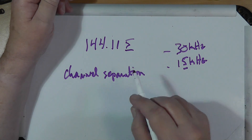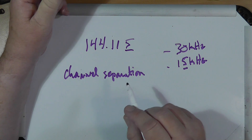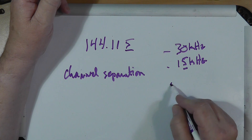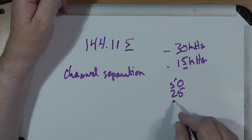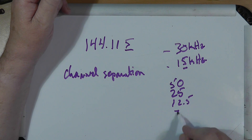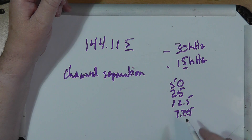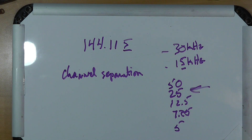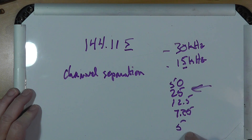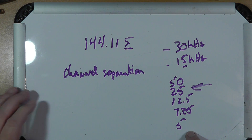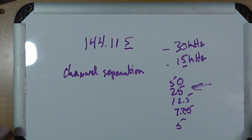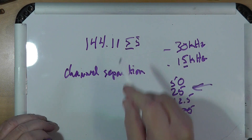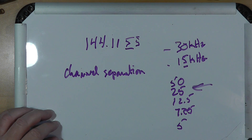So you have to tell the radio what the channel separation is. There's a menu setting for this, and it will do things like 50, 25, 12.5, 7.25, and so on — it'll get down to 5. You need to change that to 5 kilohertz. That way you can tune your radio to any frequency and it'll include a 5 over there. Find that setting and set the channel separation to 5 kilohertz, and that will solve all your problems with that particular question.